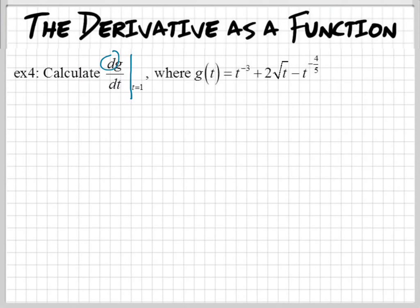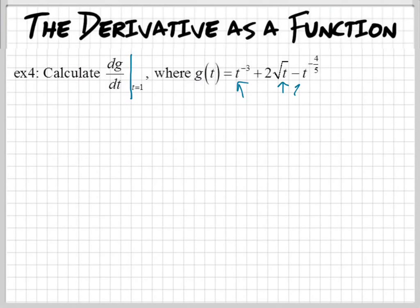We're taking the derivative of function g with respect to t. Now, we should have a function g — and there's a variable t inside of it. This is called explicit differentiation because it has one variable in here. We're explicitly taking the derivative of the function g. So let's get down with this and take the derivative.